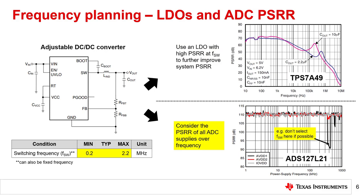In either case, the ADC has frequency dependent PSRR specifications for each supply. The plot on the bottom right shows a PSRR versus frequency curve for the ADS127L21, a 24-bit wide bandwidth delta sigma ADC. Note that the response is effectively flat at 110 dB for all supplies across frequency, because this ADC has integrated LDOs on the supplies. However, there is some sensitivity on AVDD1 at approximately 400 kHz, which should be avoided when selecting a switching frequency. While we have only discussed adjustable frequency switching converters, frequency planning is still necessary for fixed frequency switching converters — consider the PSRR response of the LDO and ADC and choose a component accordingly.